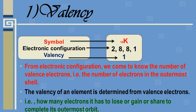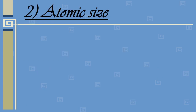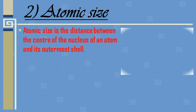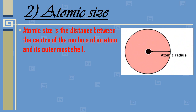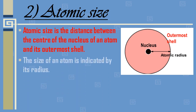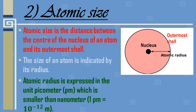The next property is atomic size. Atomic size is the distance between the center of the nucleus of an atom and its outermost shell. This distance is known as the atomic radius. The size of an atom is indicated by its radius, and atomic radius is expressed in the unit picometer (pm), which is smaller than the nanometer. One picometer equals 10⁻¹² meters.